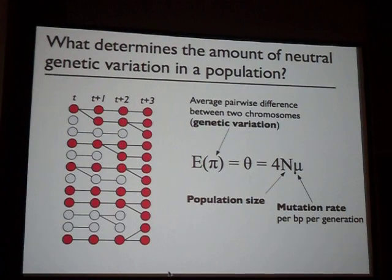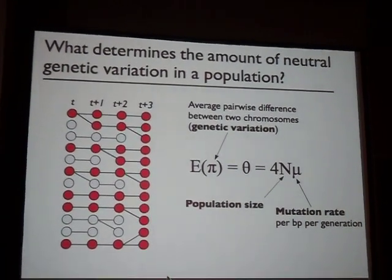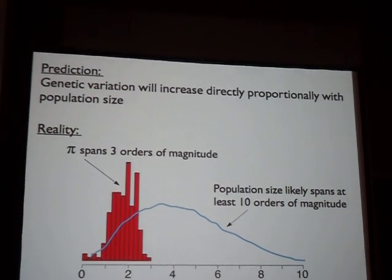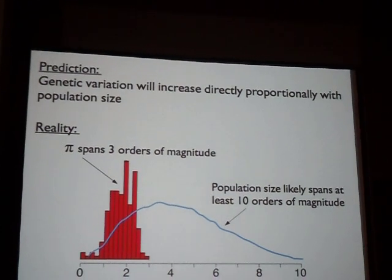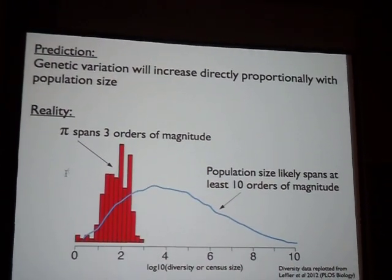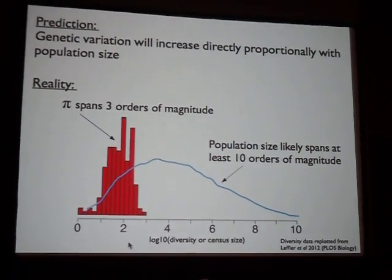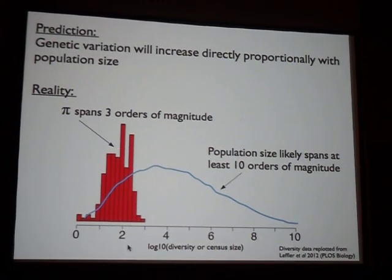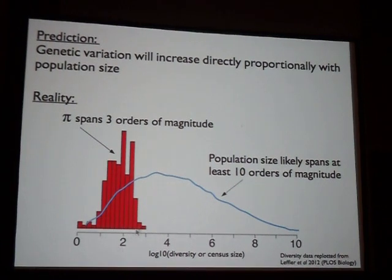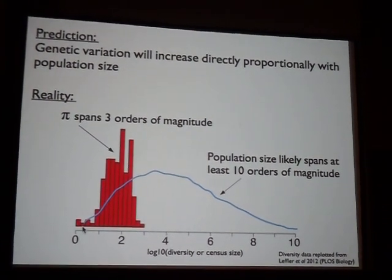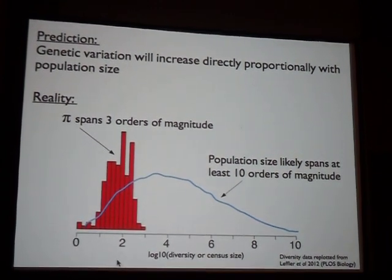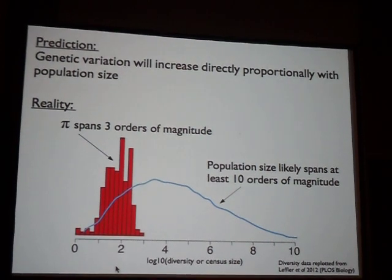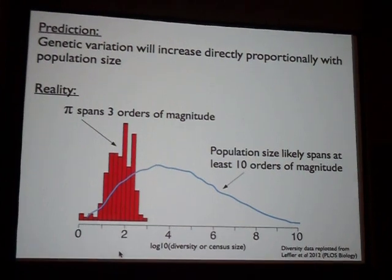In the context of a standard Wright-Fisher neutral model where population size is constant, there's no selection, and no migration, this would predict that genetic variation should increase directly proportional to population size. But in reality we don't see this particularly strong correlation. Showing data re-plotted from a recent review paper, pi spans maybe three orders of magnitude across about 150 species, but population sizes of life span a much larger range. There's a paradox: we expect much more neutral diversity among species than there actually is.